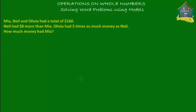Welcome to homecampus.com.sg. Let's solve a word problem using models on whole numbers. The question is: Mia, Neil and Olivia had a total of $160. Neil had $8 more dollars than Mia, and Olivia had 5 times as much money as Neil. How much money had Mia?